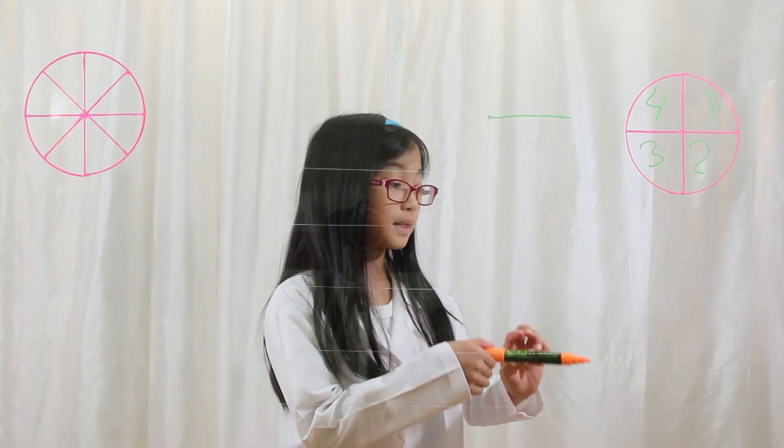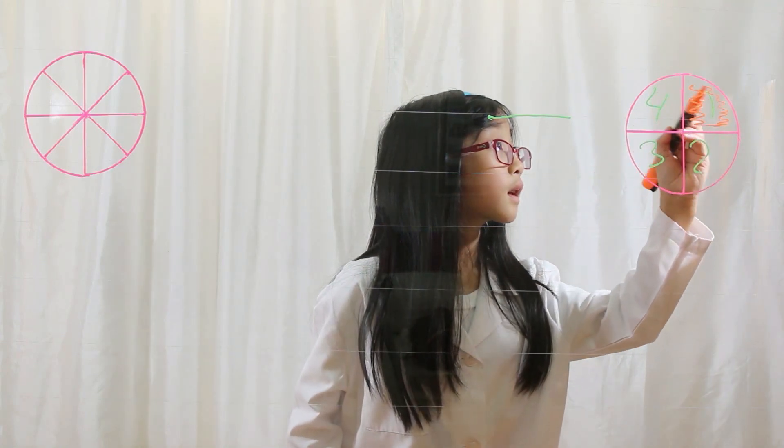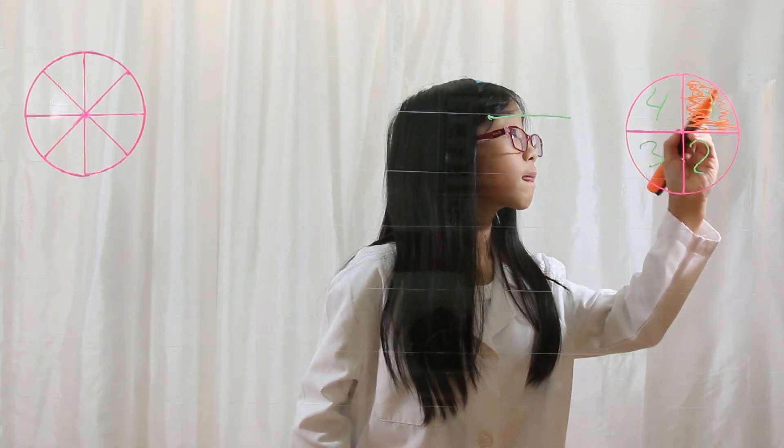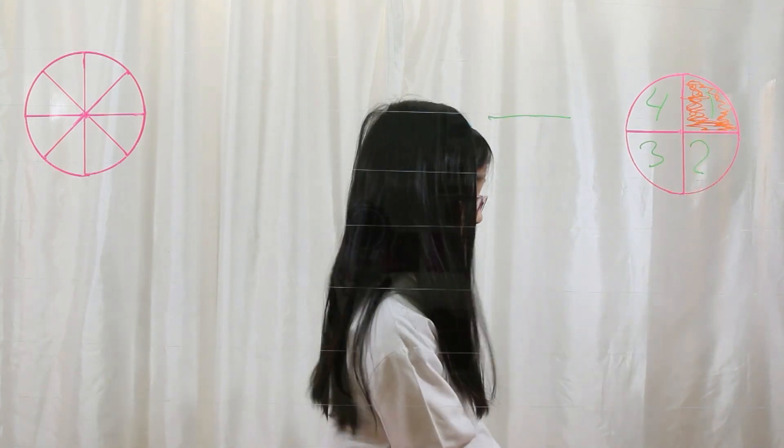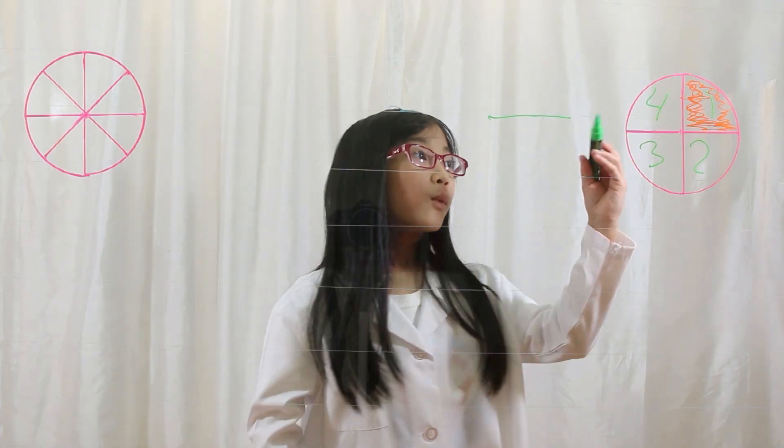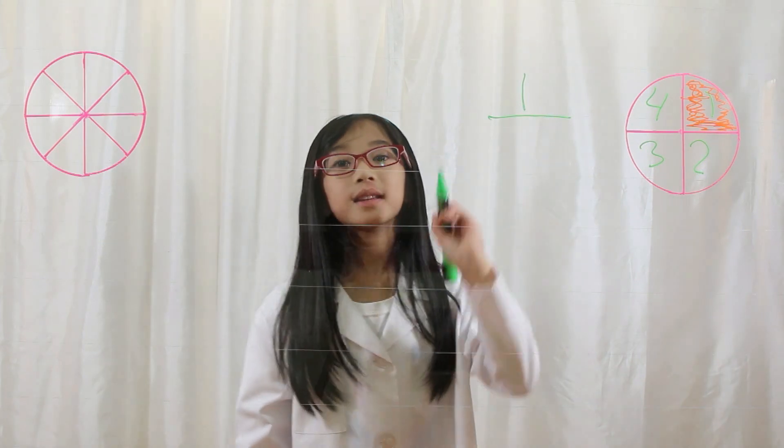So I'm going to color this piece. Okay, that's done. So one part is colored. That is our numerator. One is our numerator.